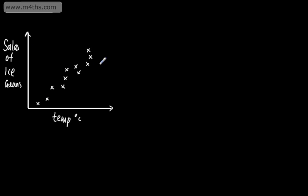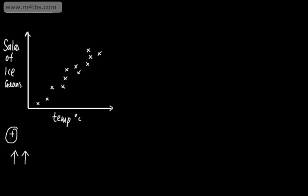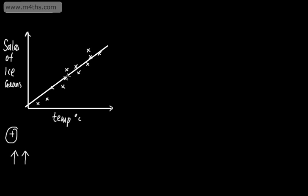So do the sale of ice creams — as the temperature goes up, the sale of ice creams also goes up. If we look at this, it looks to be in a line. We would generally say that this is strong positive correlation. The closer that is to a straight line, the stronger the relationship between them. So with positive correlation, as one value increases, the other increases also. We could go ahead and draw what we call a line of best fit through here, with approximately the same number of values either side of the line.